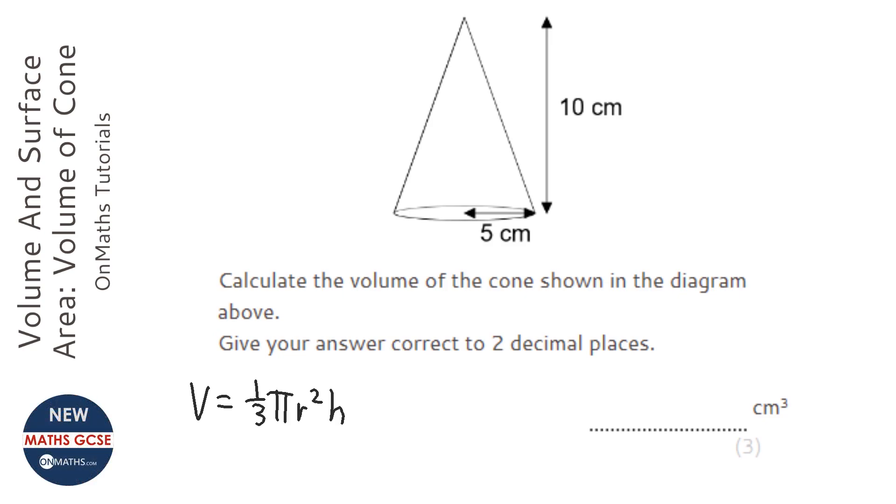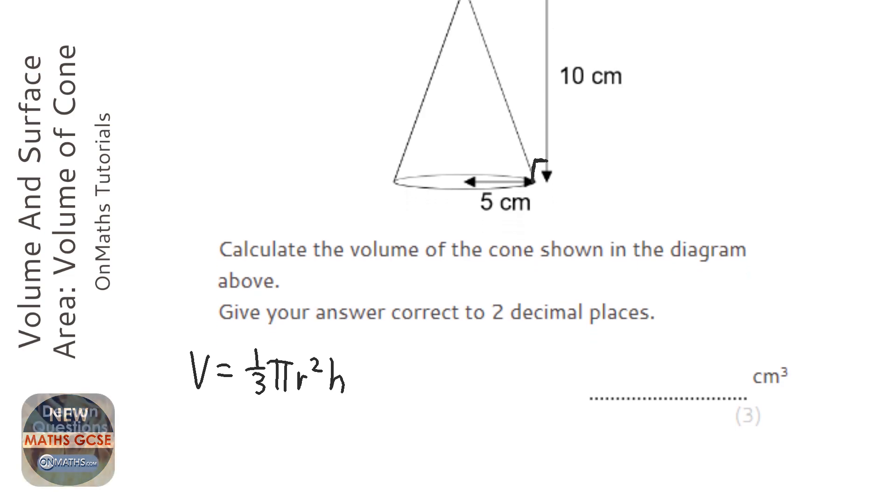Now the height has to hit the base at 90 degrees, which this 10 centimeters does. It's easy to get it mixed up with a slanted height, which goes up the side of the cone.